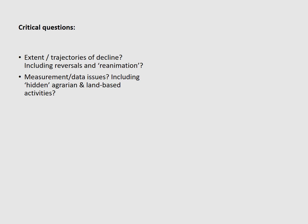The second set of critical questions concerns the enduring problem of measurement and data. To what extent do we accurately capture all the agricultural and agrarian-related activities in a given context? Other researchers in the South African context have catalogued the wide array of often hidden agricultural and land-based activities, and there is an enduring question about the extent to which we are accurately capturing the changes over time associated with de-agrarianization.